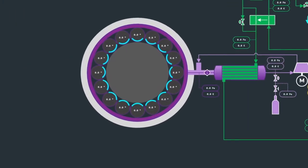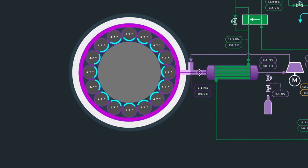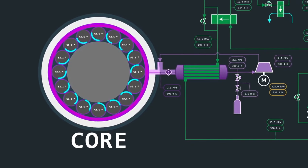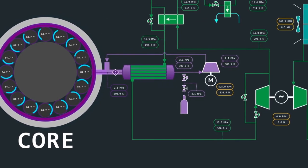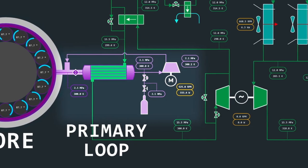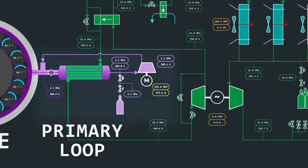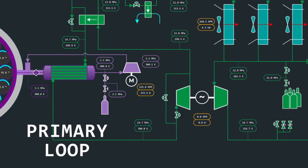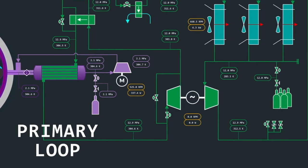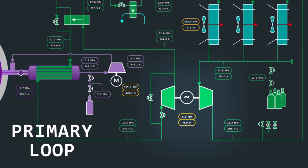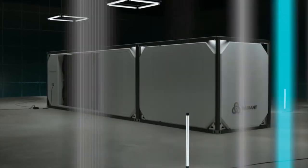Kaleidos produces heat through a controlled fission chain reaction in the graphite-moderated core. A compressor forces helium through the core in the primary loop. Helium is an inherently safe heat transfer fluid because it doesn't become radioactive. The primary loop transfers heat to a supercritical CO2-Brayton cycle, producing power in response to customer load.